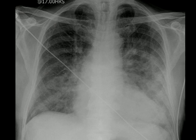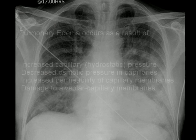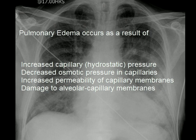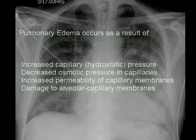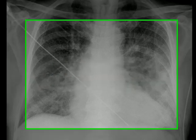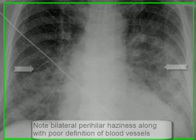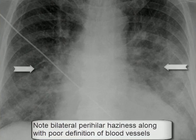Pulmonary edema can occur as a result of increased capillary hydrostatic pressure, decreased osmotic pressure within capillaries, increased permeability of the capillary membrane, or damage to the alveolar capillary membrane, which will increase permeability.